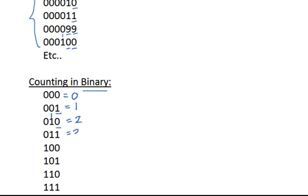To count to 3, we have a 0 in the rightmost position, so it simply increments to 1, giving us 0, 1, 1. To count to 4, we've reached our last symbol on both rightmost digits, so both reset to 0 and we start a new column — giving us 1, 0, 0 in binary, which is 4 in base 10. This is exactly what happened when we counted from 99 to 100 in decimal: we reached the maximum symbol on two rightmost digits, reset them, and started a new column.